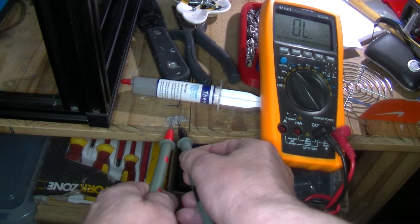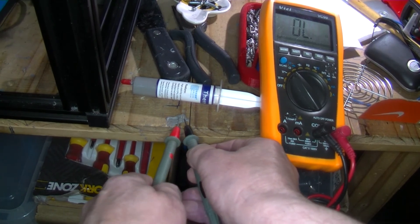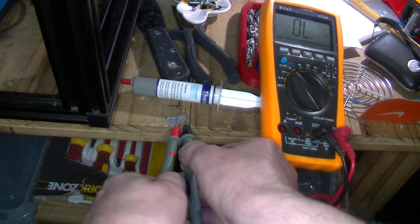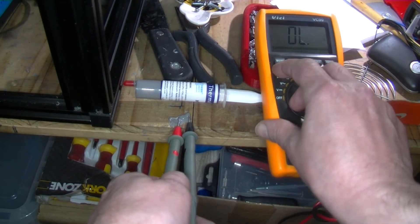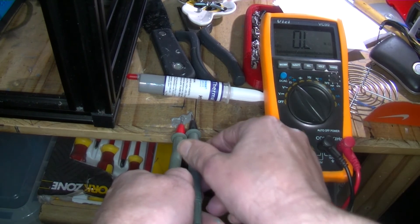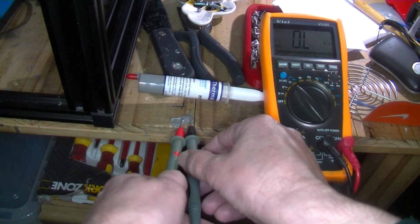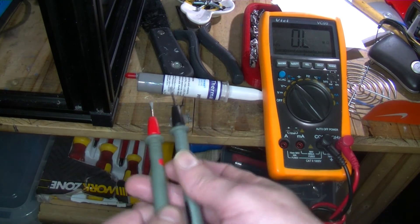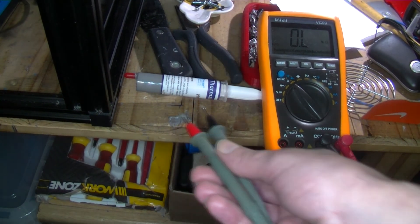Short tail. So it does show the resistance even on continuity. Put on normal resistance. So no, it wasn't shortened out with the heat sink paste.